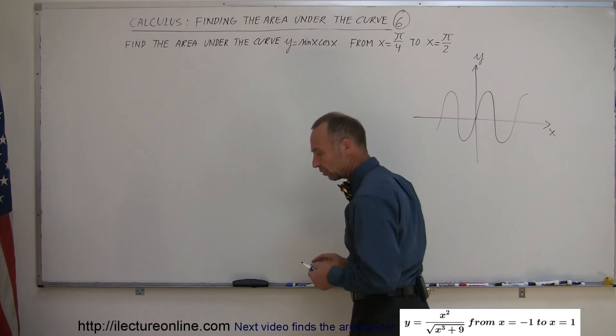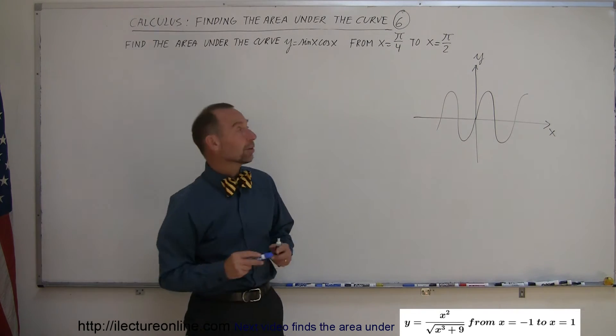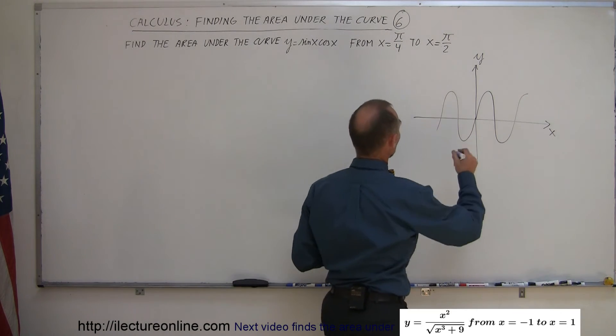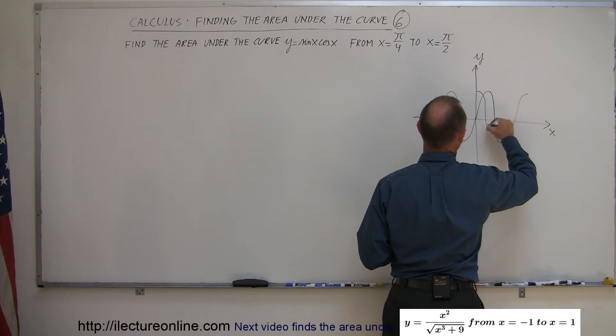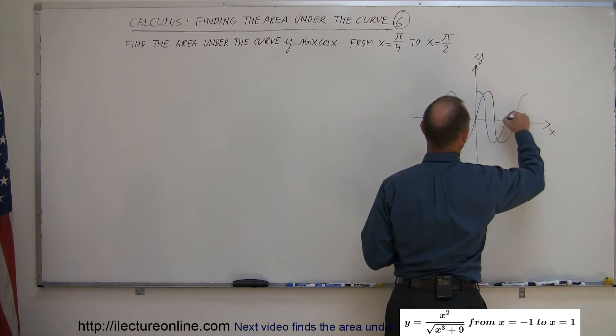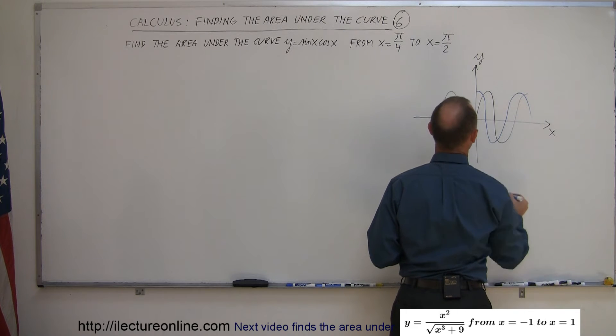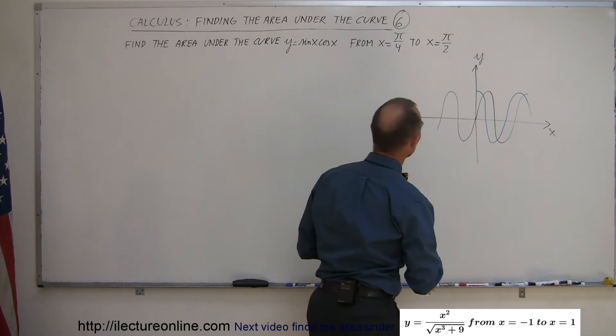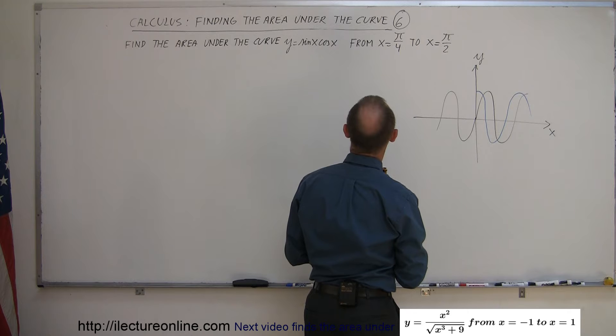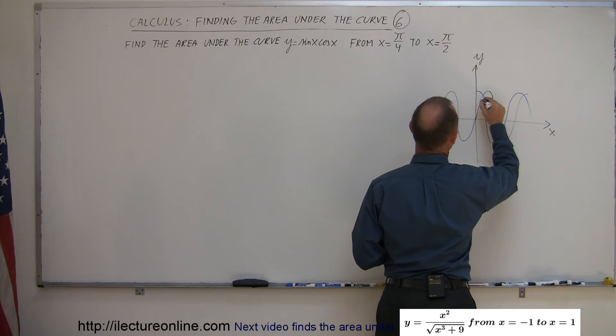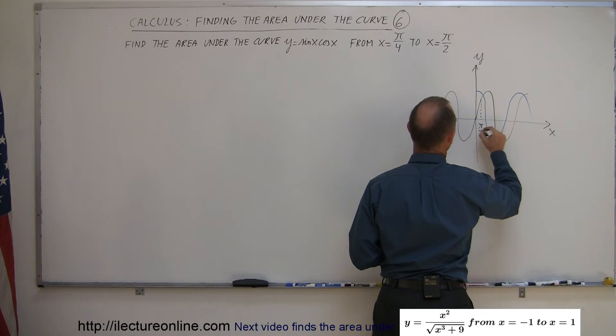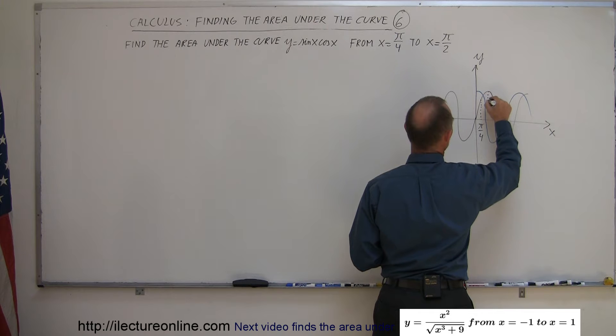And now let's graph the cosine of x. I'm going to use a different color for that. The cosine of x starts like this and goes down like that. It comes up and goes like this and like that. And now notice that we're trying to find the area underneath the curve from pi over 4, which is from right about here. This is pi over 4 to pi over 2, which is right up here.